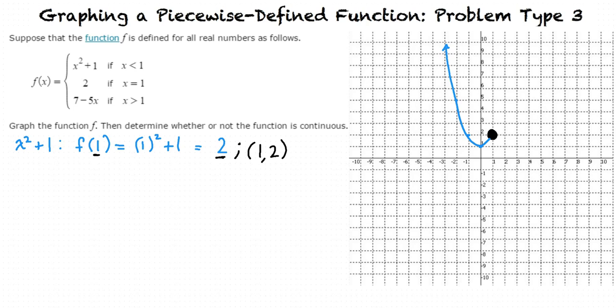Now we have a linear expression, 7 minus 5x, when x is greater than 1. We will plot the first point of the line at x equals 1. By substituting 1 in for x in the expression, the y value is 2. We would normally plot an open circle here, but because 1 comma 2 is already included, we leave it as a closed circle.